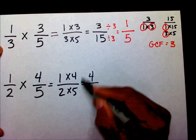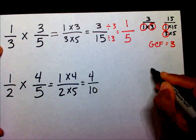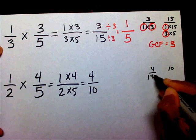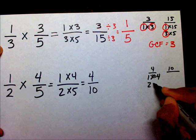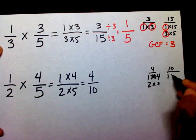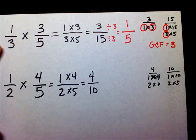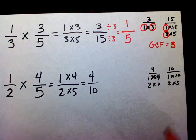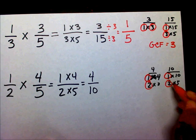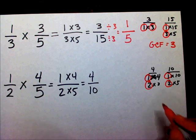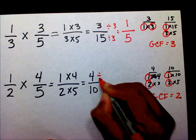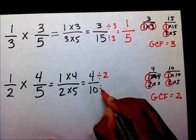Now I need to see if I can reduce this. So I'm going to list my factors for four and ten, which is going to be one times four and then two times two. And my factors for ten are one and ten, two and five. What are their common factors? One and two. Since my greatest common factor is two, then I'm going to divide the numerator by two and my denominator by two.